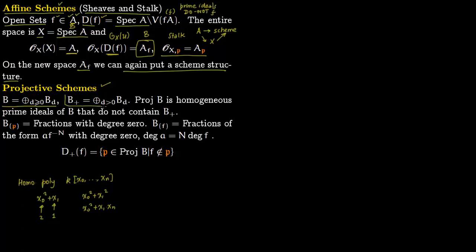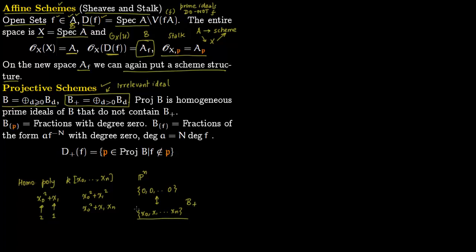Keep in mind the graded ring B, but notice that the degree-0 part is excluded — this is called the irrelevant ideal B₊. There is a reason we skip this ideal: in projective space the origin is not present. By Nullstellensatz, the origin corresponds to the ideal generated by X₀, X₁, …, Xₙ, which generates precisely B₊. Since this point is not in projective space, we do not want this ideal — that is why it is called the irrelevant ideal.